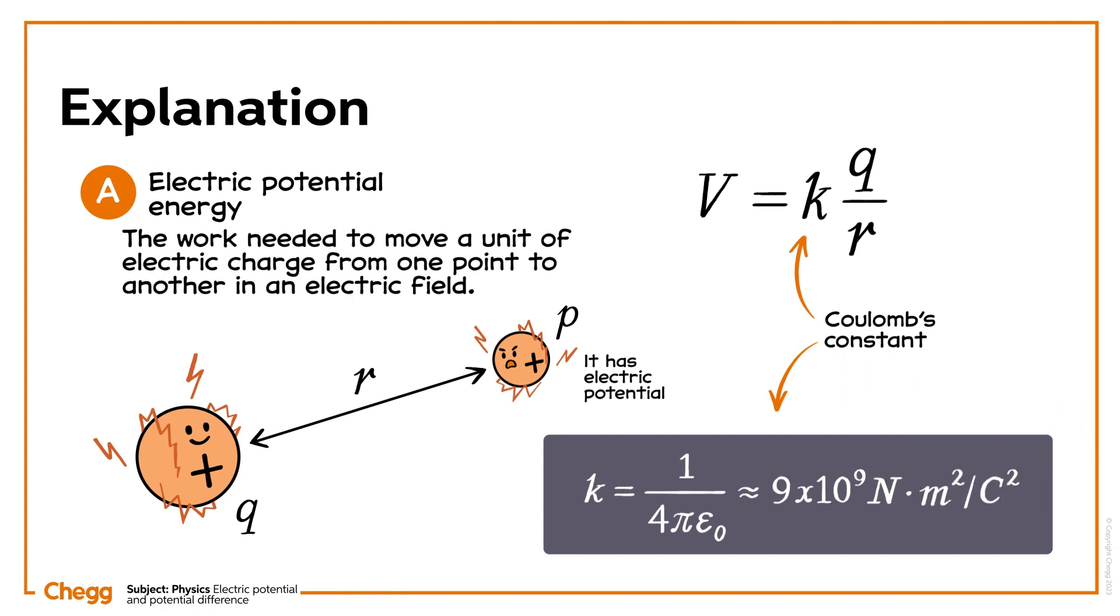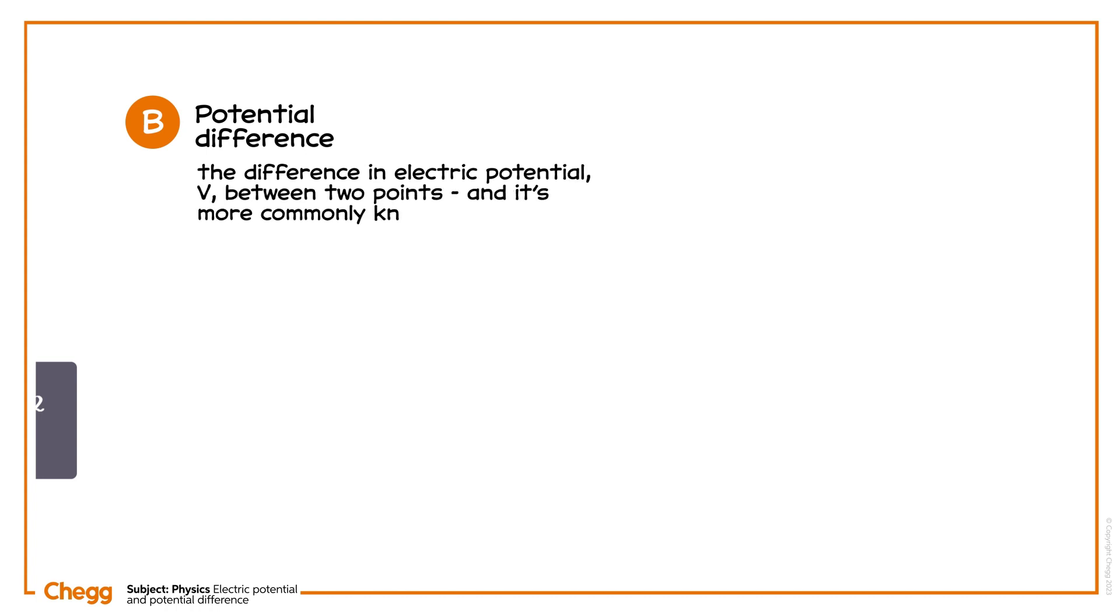So that's the definition and formula for electric potential. The second term we'll introduce in this video is potential difference. Potential difference is simply the difference in electric potential v between two points, and it's more commonly known as voltage.